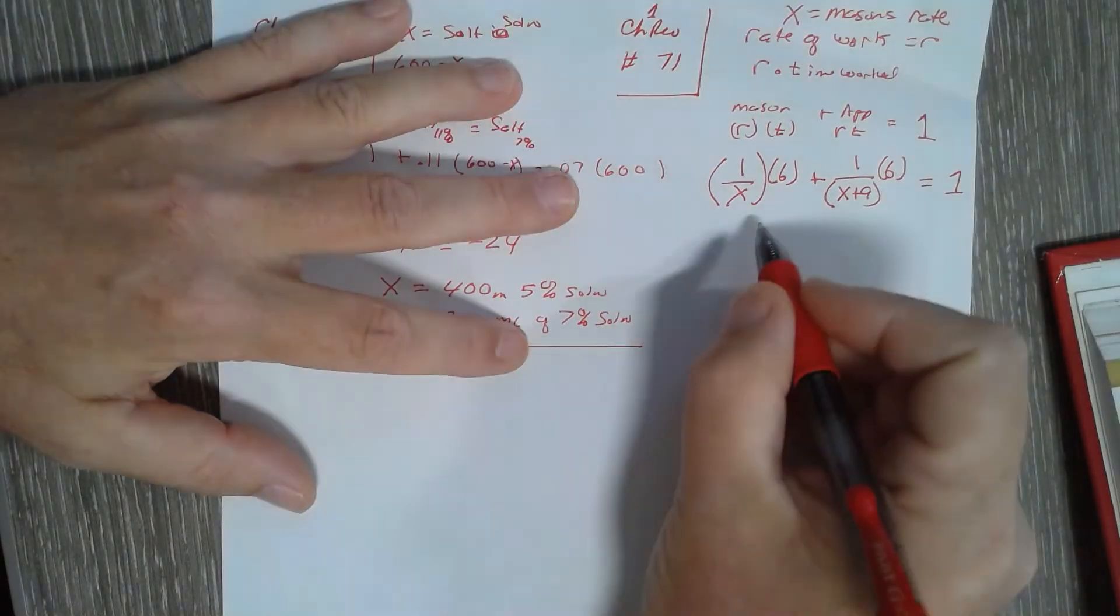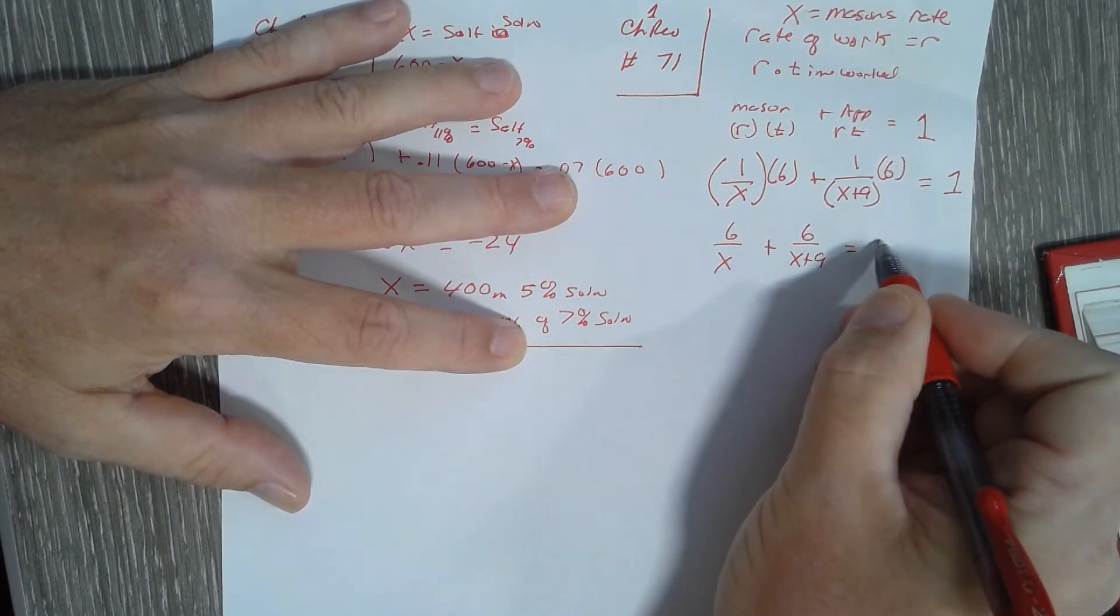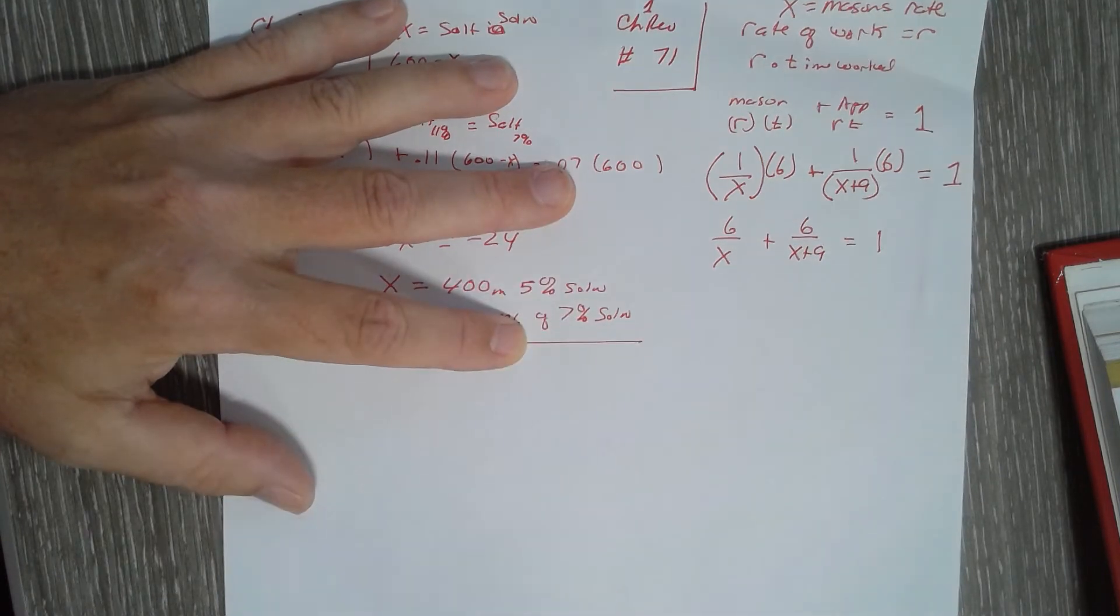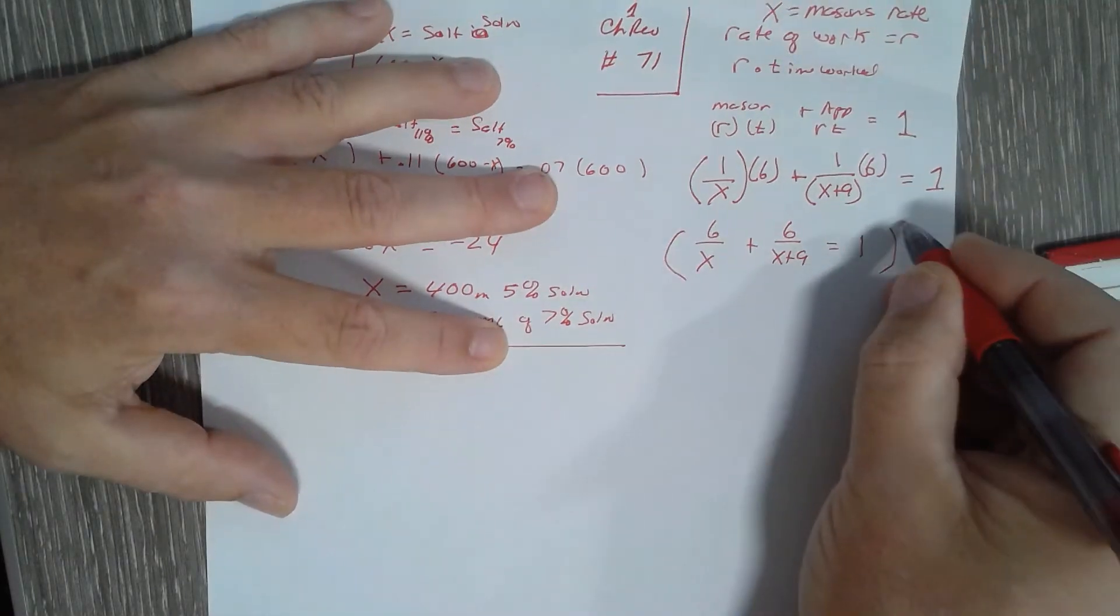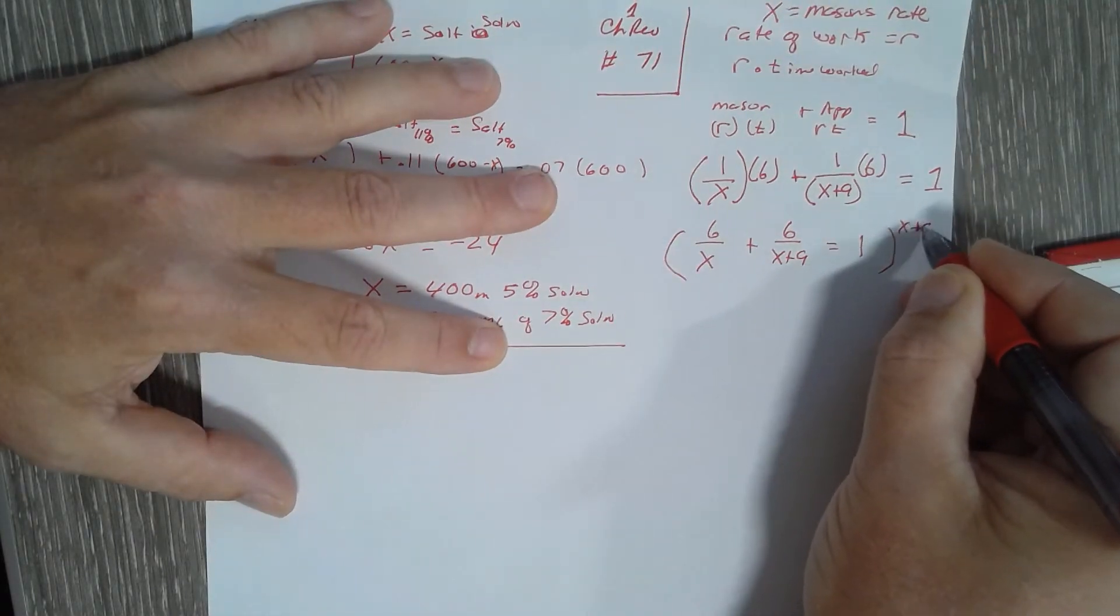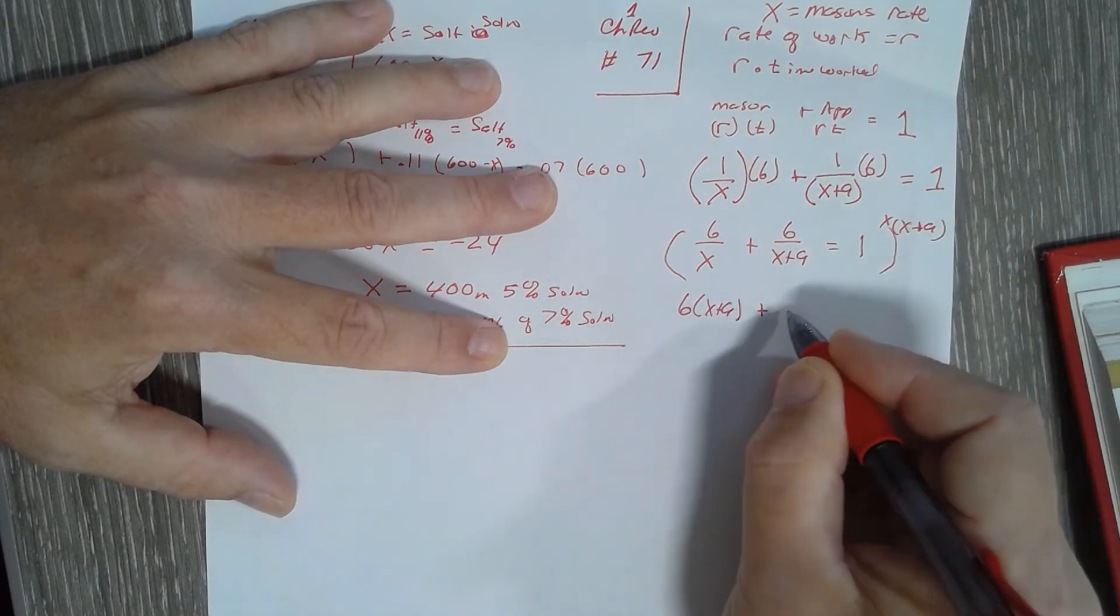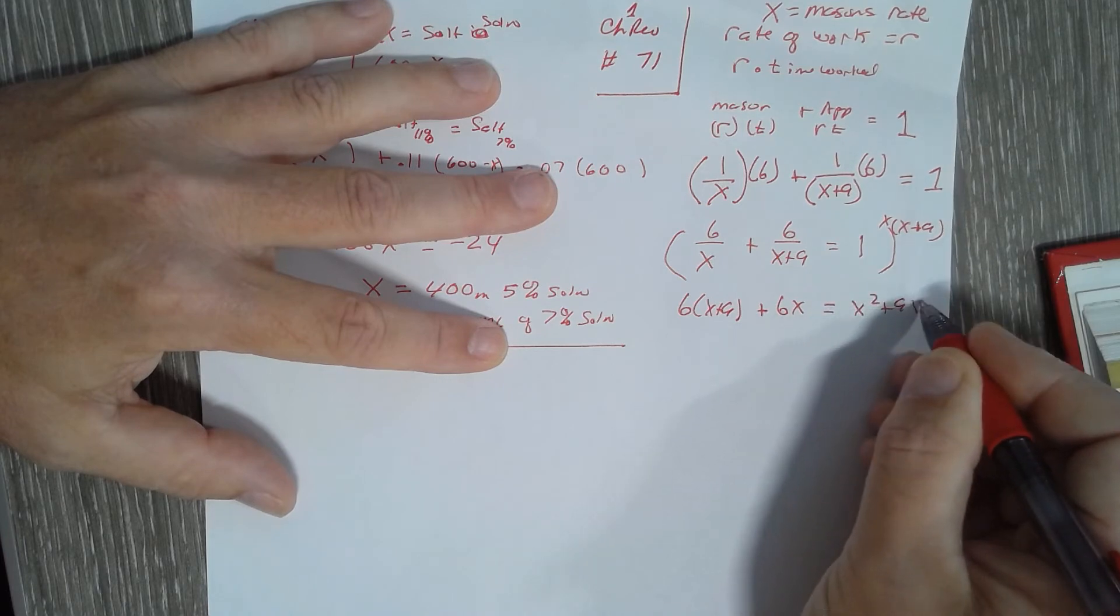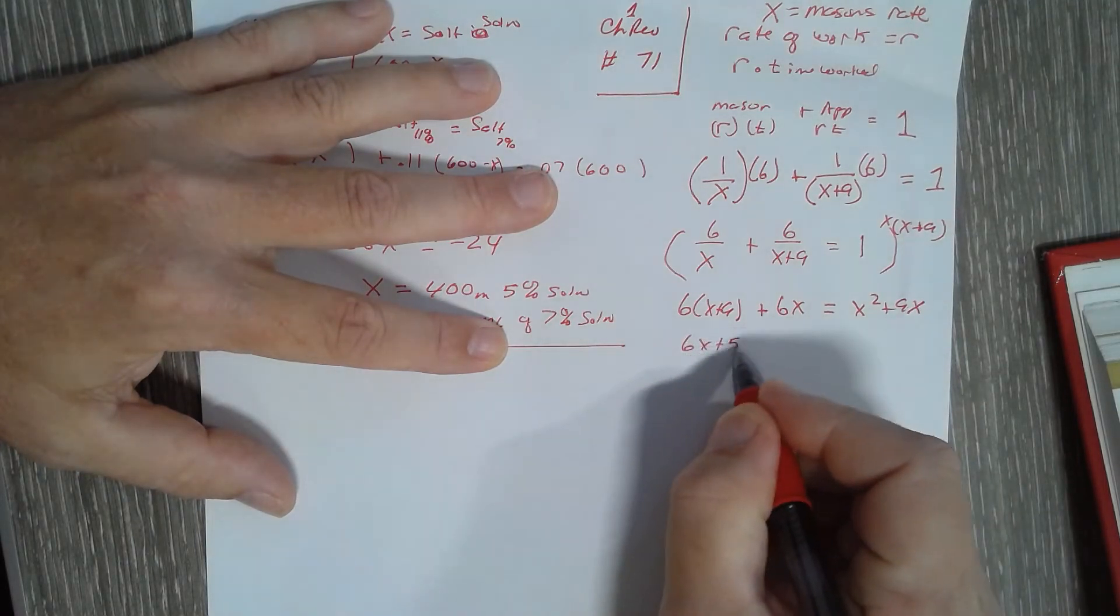So this equation actually becomes six over x plus six over x plus nine equals one. The rate of work multiplied by how long they work, multiplied by the common denominator, which is x times x plus nine. I get six times x plus nine plus six times x equals x squared plus nine x. So six x plus 54.